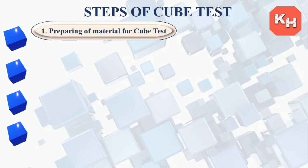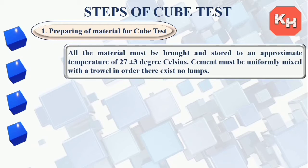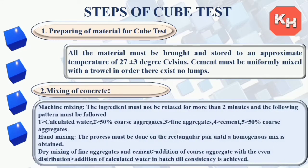For the cube test, all materials must be brought and stored at an approximate temperature of 27 ± 3°C. Cement must be uniformly mixed with a trowel so there are no lumps. For machine mixing, ingredients must not be rotated for more than two minutes, following the pattern: calculated water, then 50% coarse aggregate, then fine aggregates, then cement, then the remaining 50% coarse aggregate.